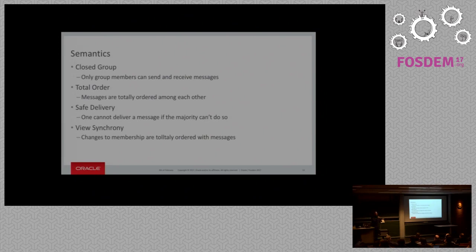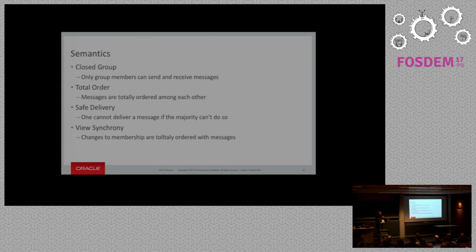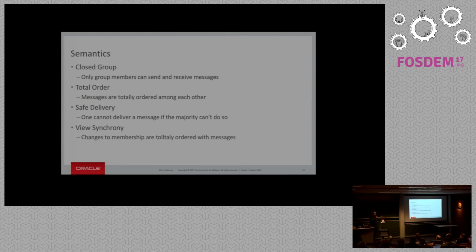The thin layer has to preserve important properties from the group communication system. First, it must provide total order — messages sent to remote nodes must be totally ordered among all messages being sent by concurrent nodes. Second, it must preserve safe delivery, meaning a message is only delivered to a node when a majority of nodes have received it. Safe delivery was one of the key issues with CoralSync: a node could receive a message, do something with it, and then fail — but the other nodes wouldn't get it, leading to inconsistency.